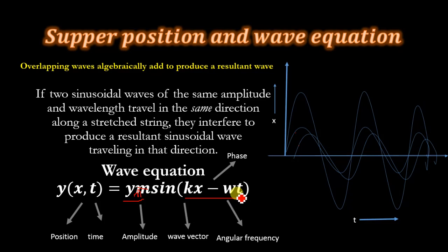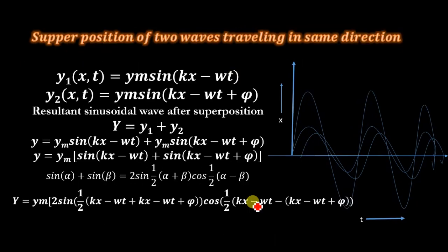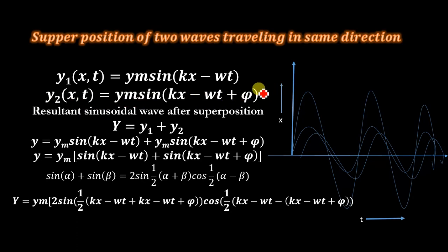Using this equation we can derive different quantities, and this equation carries detailed information about the waves. Suppose we have two waves: y1(x,t) = ym·sin(kx − ωt) and y2(x,t) = ym·sin(kx − ωt + π), where π is the phase difference between wave one and wave two.